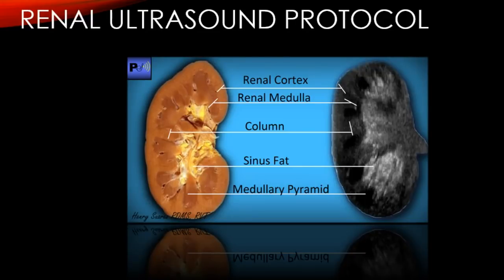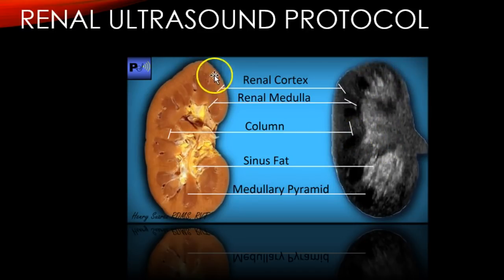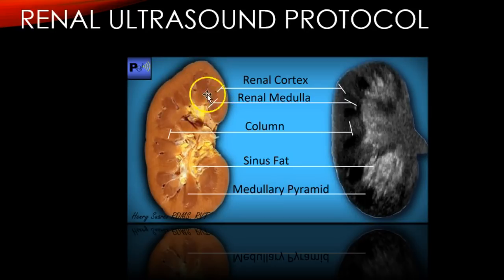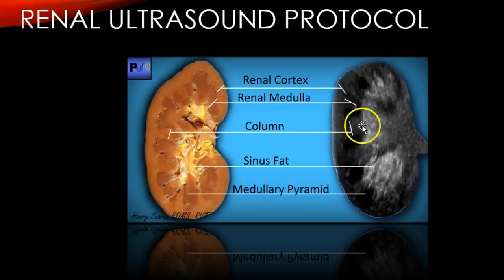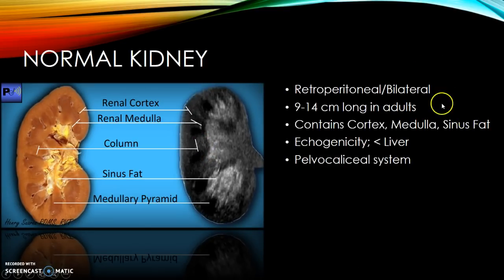Today I'm going to go over a renal ultrasound protocol and some basics. Here's a sagittal cross-section of the kidney showing gross anatomy and the ultrasound appearance. You can see the renal cortex all around it, the renal medulla or medullary pyramids which are hypoechoic, the cortex with medium-level echoes, and the echogenic renal sinus fat.